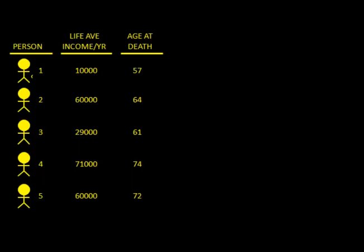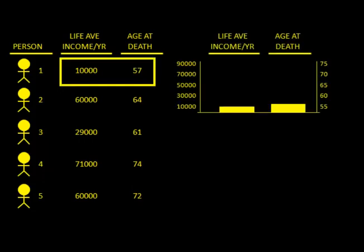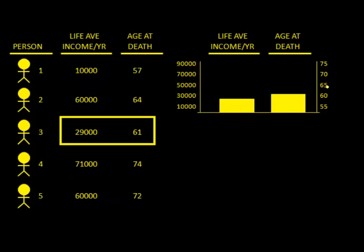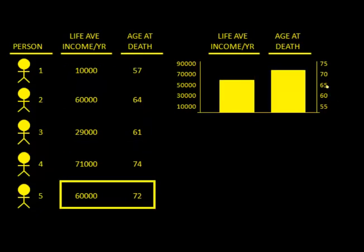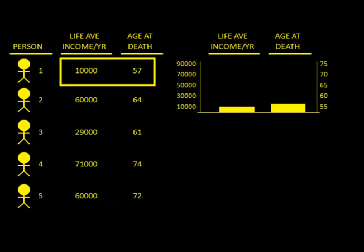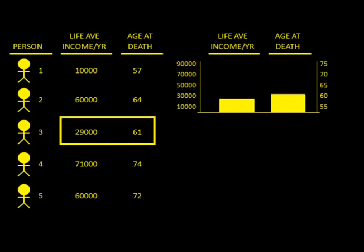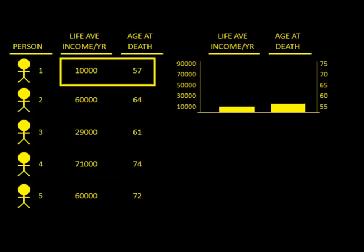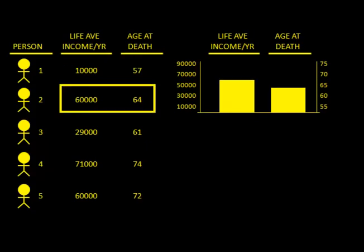What we're doing in these models is looking for patterns in the data. Let's draw a picture with average income on the left as a bar, and age at death on the right. This person's income is $10,000 per year, so the bar is at $10,000, and their age at death is 57. As we go through all the people in the dataset and show the data visually, we begin to see a very clear pattern: as lifetime average income increases, age at death tends to increase.